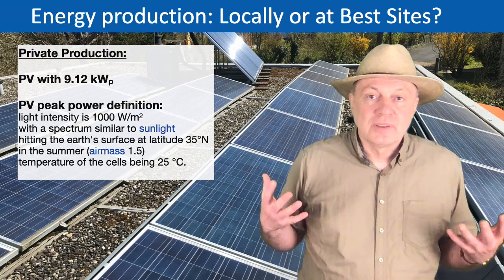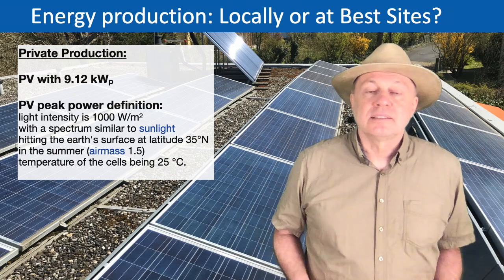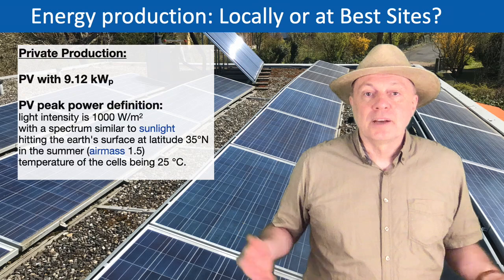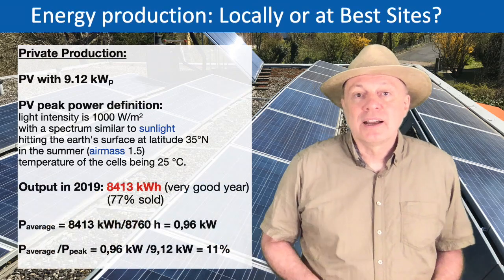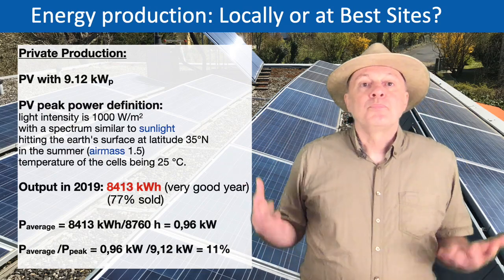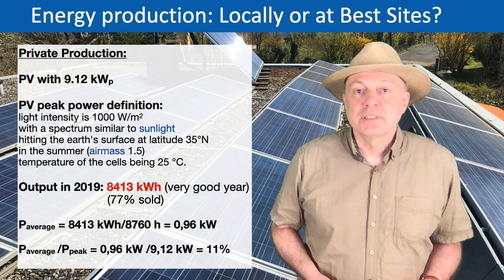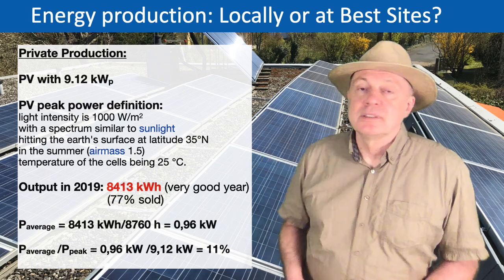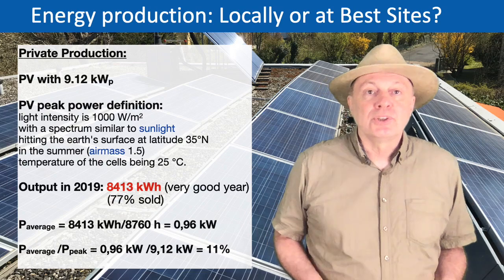Of course it also depends on the angle at which the Sun hits the solar modules — it is not necessarily perpendicular to the surface. Especially for you, I looked up what output my photovoltaic gives on average over the year. For the year 2019 I had a total energy production of 8,413 kilowatt hours. In comparison to other years, 2019 was quite sunny, so I had a little bit more integrated power than usual.